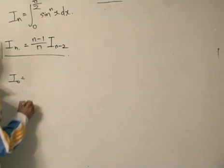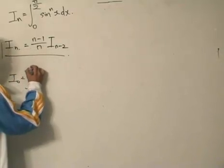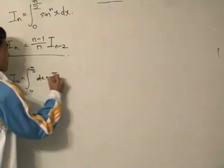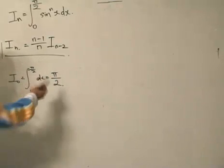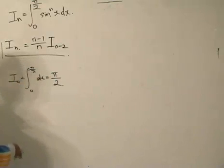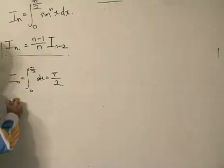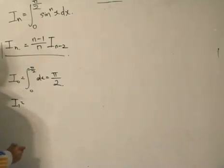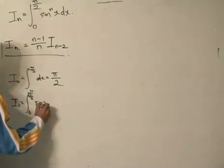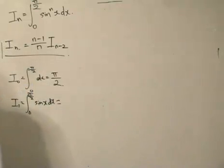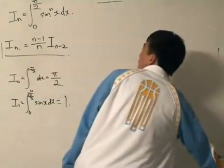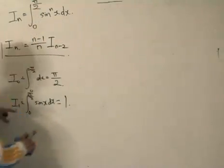I₀ is equal to π/2, right? This is the integral of 1 dx from 0 to π/2, so we get π/2. And this is why the π/2 comes out — because when he puts I₀, he gets π/2. We also need I₁: I₁ equals the integral from 0 to π/2 of sin(x) dx, which equals 1. So I₀ is π/2 and I₁ is 1.